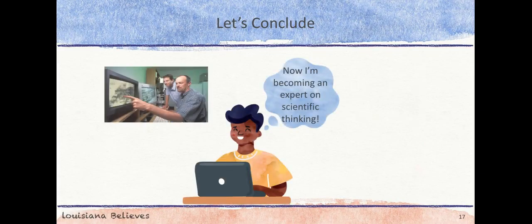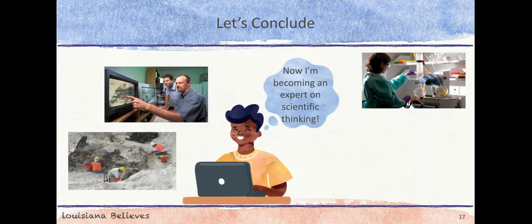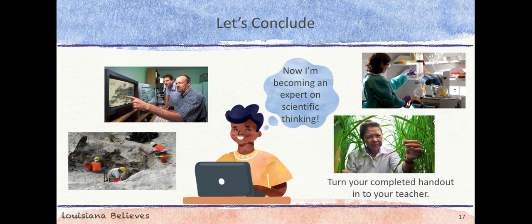You have learned about the important role scientists play in our lives and the inquiry process they follow. As you read the text in the ELA guidebook unit, The Making of a Scientist, you will use this information as you analyze scientific theories, explain how they have changed over time, and illustrate how scientists use the inquiry process to drive their thinking. When you finish this video, be sure to turn in your completed handout to your teacher.